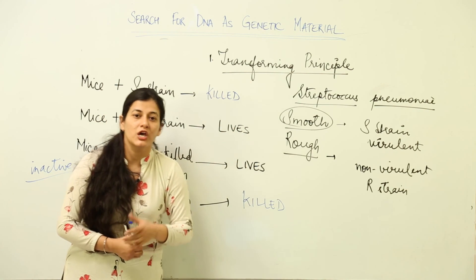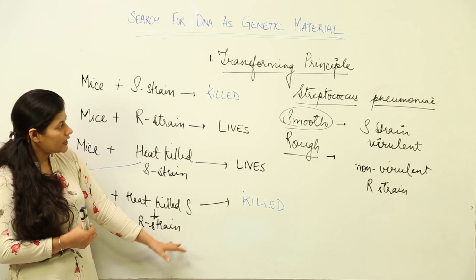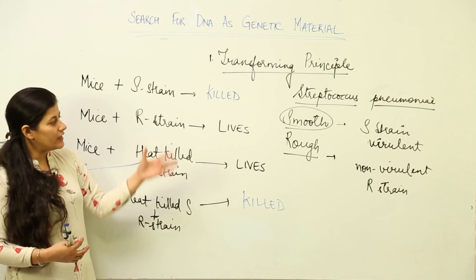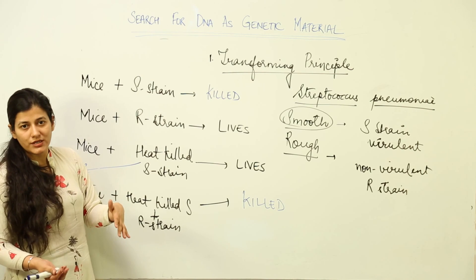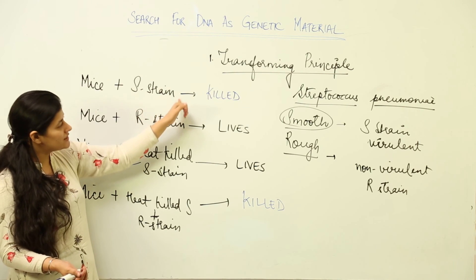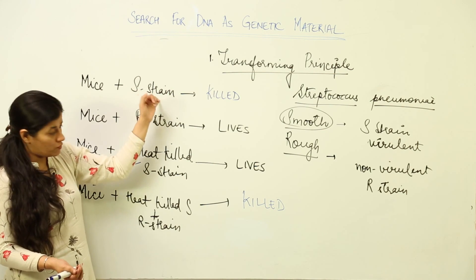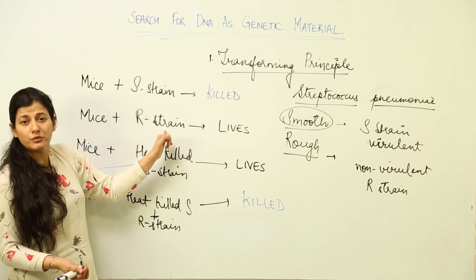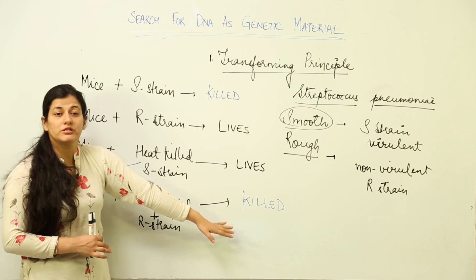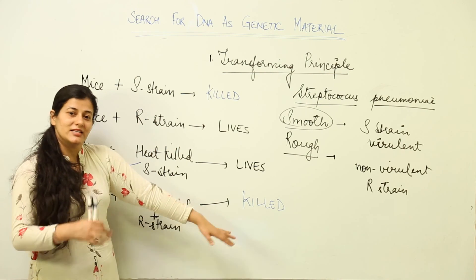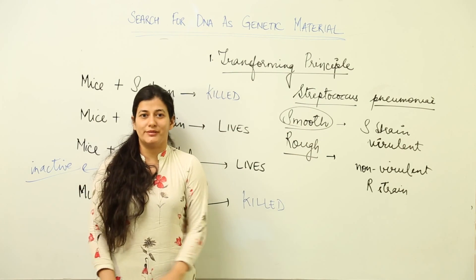This experiment is quite famous in genetic studies for establishing the whereabouts and know-how of DNA — the transforming principle experiment by Griffith. The key takeaway is: one strain kills, the other does not. When the killing strain is disabled but brought into contact with the non-killing strain, it still causes killing — and that is brought about by the transforming principle.